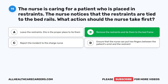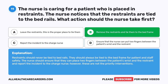The correct answer is B: Remove the restraints and tie them to the bed frame. Restraints should never be tied to bed rails; they should always be tied to the bed frame for patient and staff safety. The nurse should also ensure two fingers can be placed between the patient's wrist and the restraint, and report the incident to the charge nurse, but these are not the priority interventions.